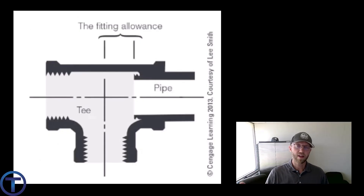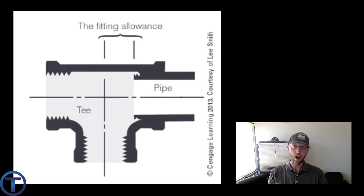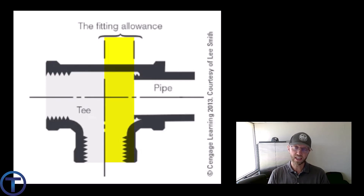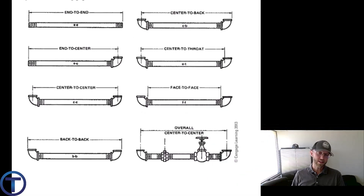Unit 8 gives us another illustration of a fitting allowance on a threaded T. You can see the T with the center line of pipes marked. On the right side, the pipe is coming into that T. You can see where that pipe stops, and the space between the end of that pipe and the center line of the fitting — that's the fitting allowance. That's what we subtract from our center-to-center to get our cut.